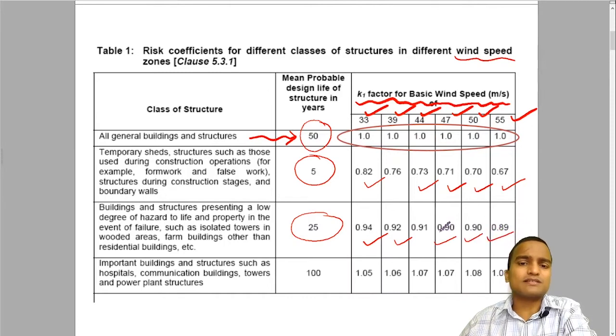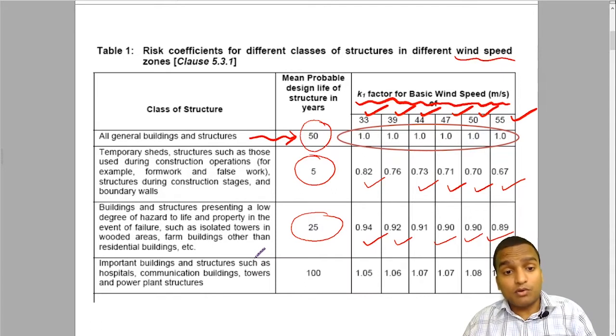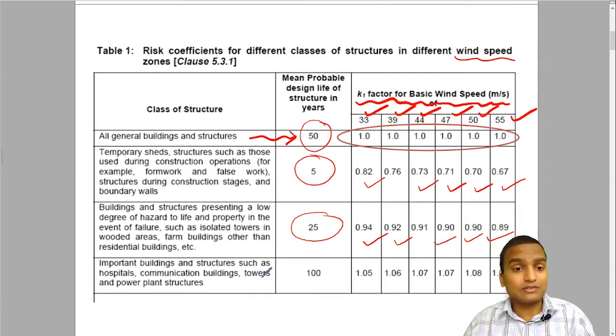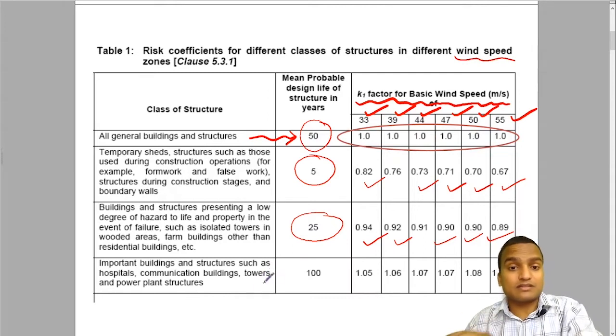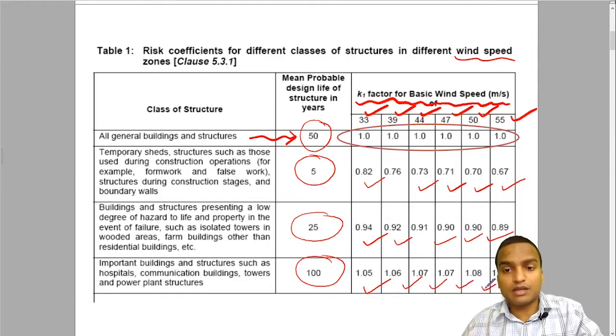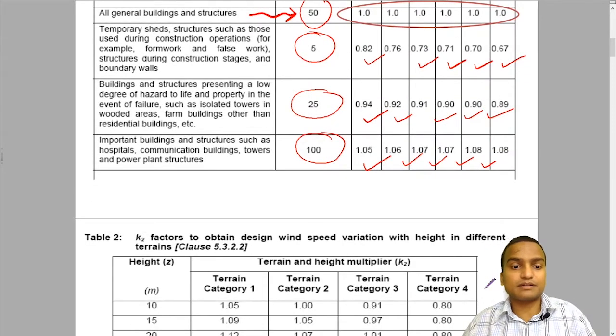These parameters are easy to understand. Whereas there will be few important buildings and structures such as hospitals, railway stations, communication buildings, towers, colleges, and power plant structures. For them, here it is written 100 years, and for them we keep higher risk coefficient higher than one. I hope you are able to understand it.